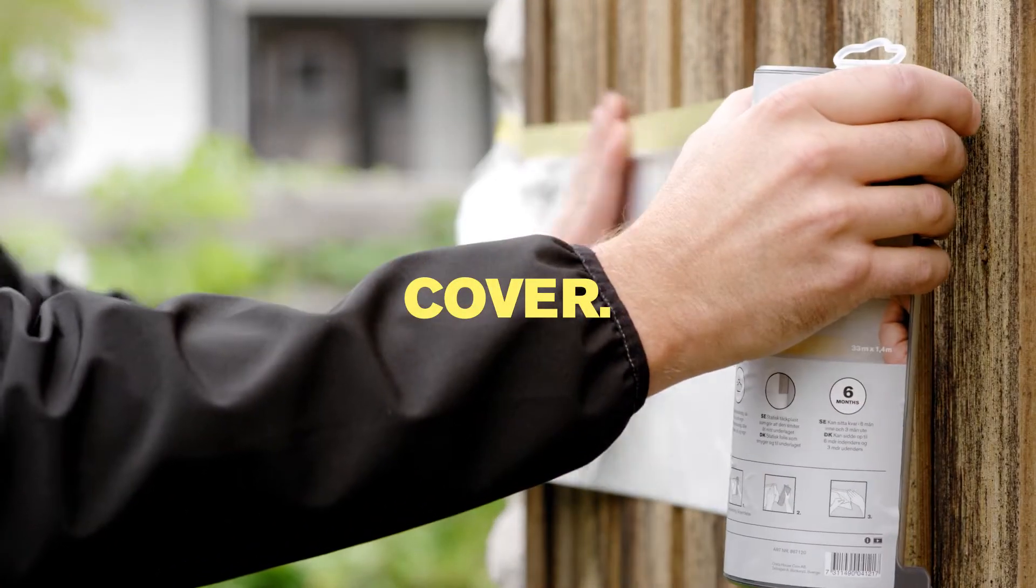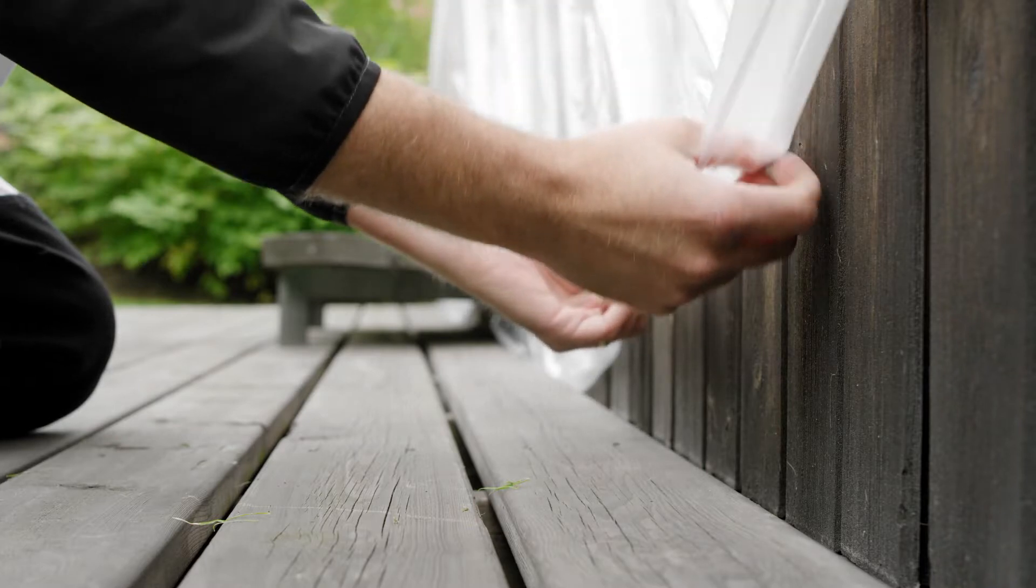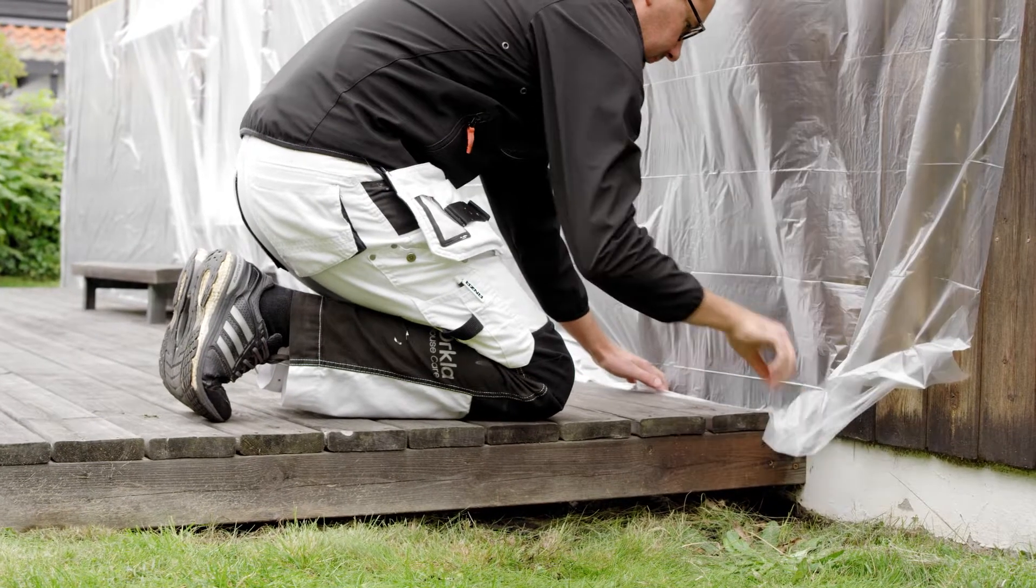Start by placing plastic covering over the foundation of the house, plants and other sensitive areas to protect against splashes from the terrace detergent.